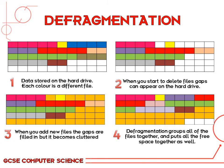This colourful diagram should make things a lot clearer when looking at defragmentation. Going through steps 1 to 4: at step 1 you can see data saved on a hard drive, where each different colour is a different file. For step 2, when you start to delete files, gaps start to appear on the hard drive — all of the little white spaces are gaps because a file has been deleted.